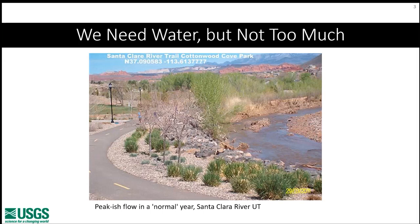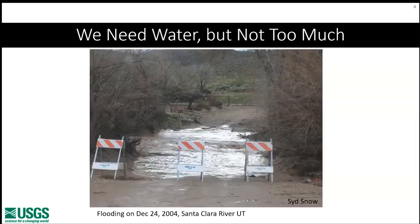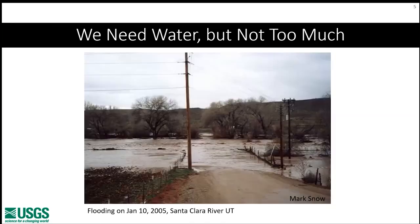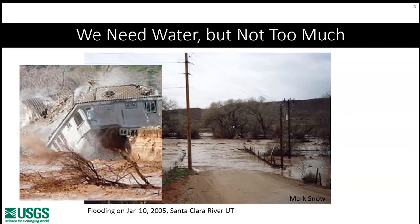To start, I want to give an example from my hometown in Santa Clara, Utah. This is the Santa Clara River around peak flow. The river goes dry almost every year, but it's also a desert river with flashiness. In late 2004 there was a flood event — by December 24th it was a substantial flood, and by about two weeks later it had grown to a very dangerous stage, causing much property damage and homes lost throughout the region in early 2005.